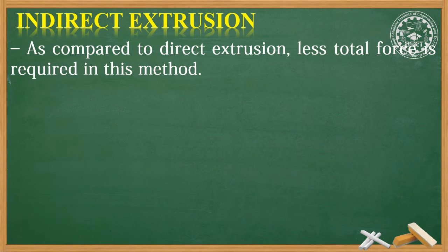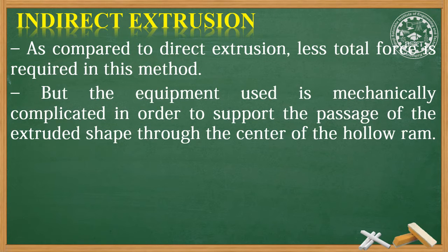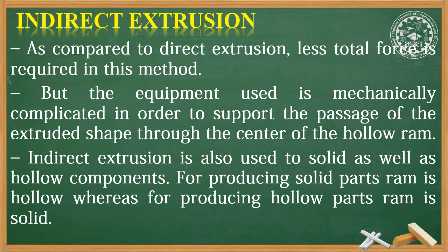As compared to direct extrusion, less total force is required in indirect extrusion. However, the equipment used is mechanically more complicated in order to support the passage of the extruded shape through the center of the hollow ram. Indirect extrusion is also used to produce solid as well as hollow components. For producing solid parts, the ram is hollow, whereas for producing hollow parts, the ram is solid.